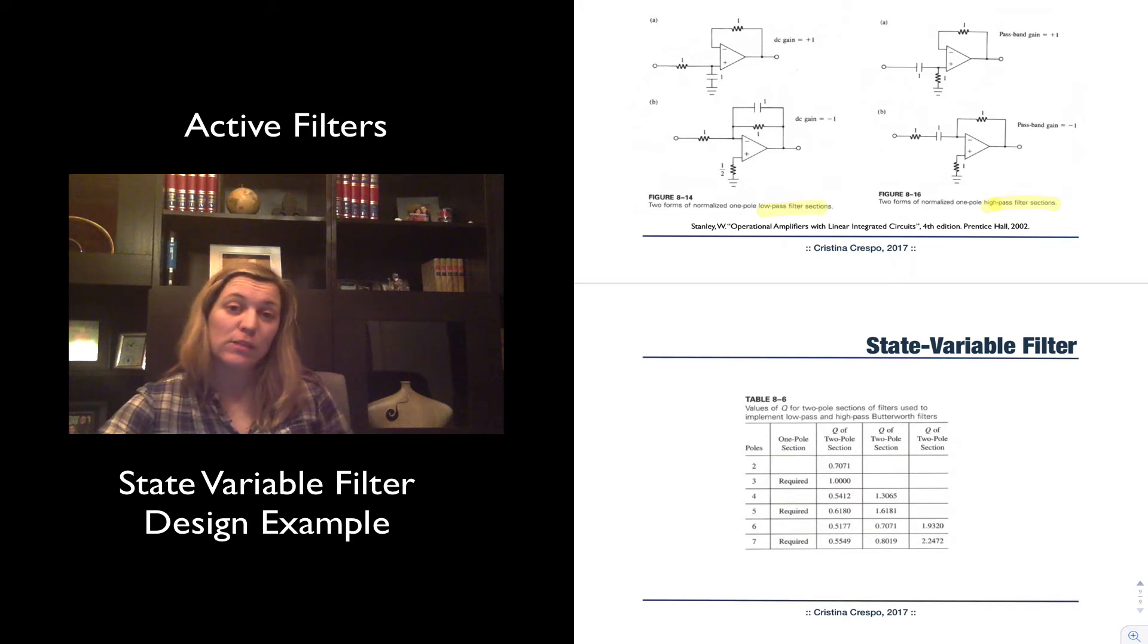You can see that it follows the same line as the Butterworth filter, where for an order of filter that is even, you basically are combining two-pole sections, and for an order of filter that is odd, you will be combining a one-pole section and however many needed two-pole sections.